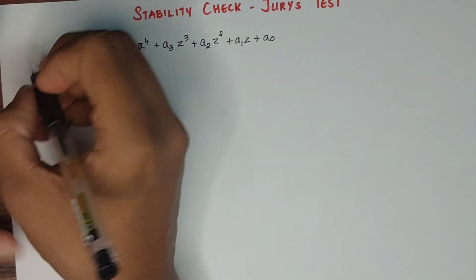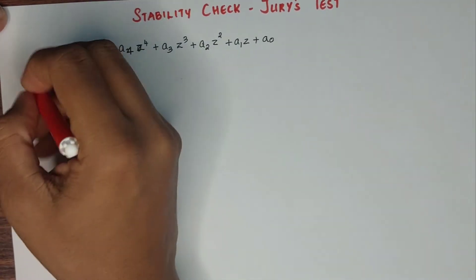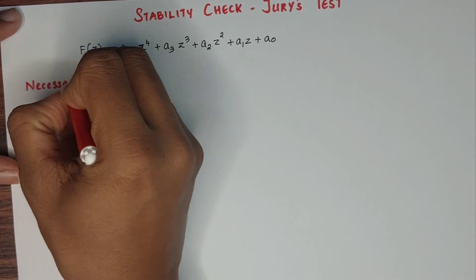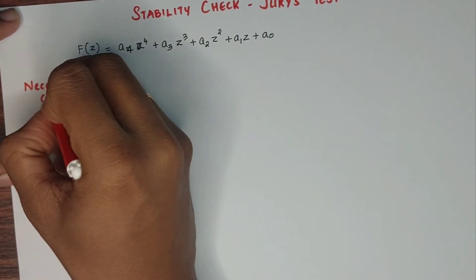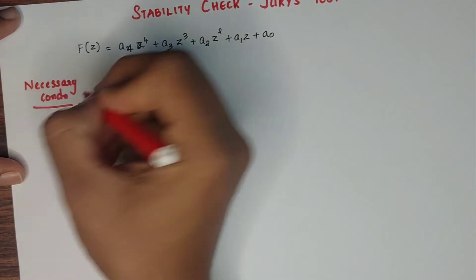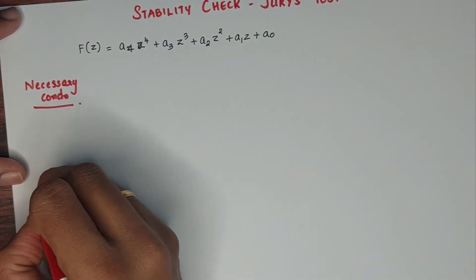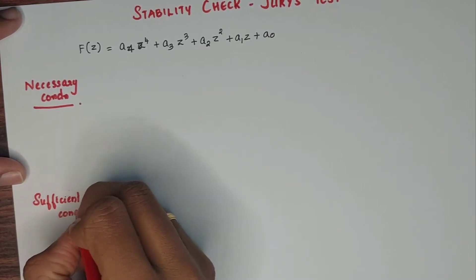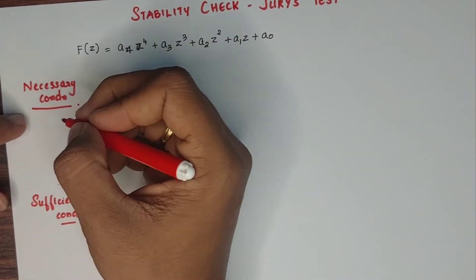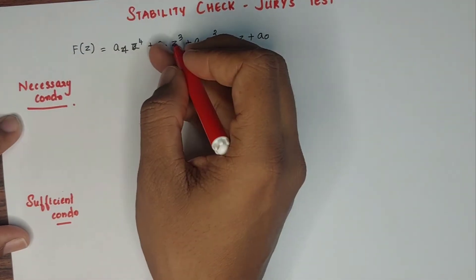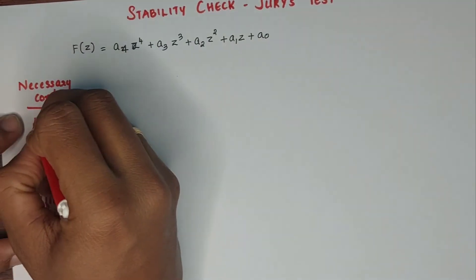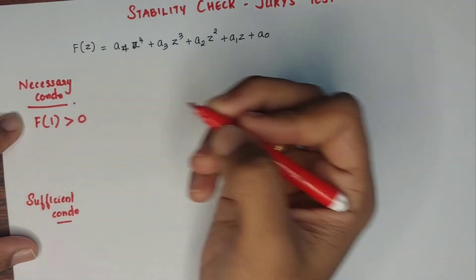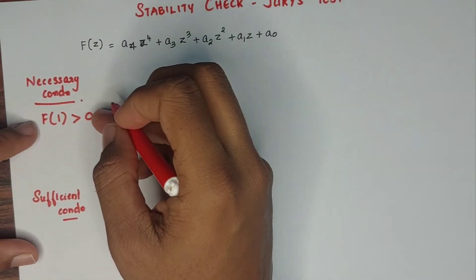The first condition is the necessary condition. The necessary condition is that f(1) is greater than 0. This is the first condition.